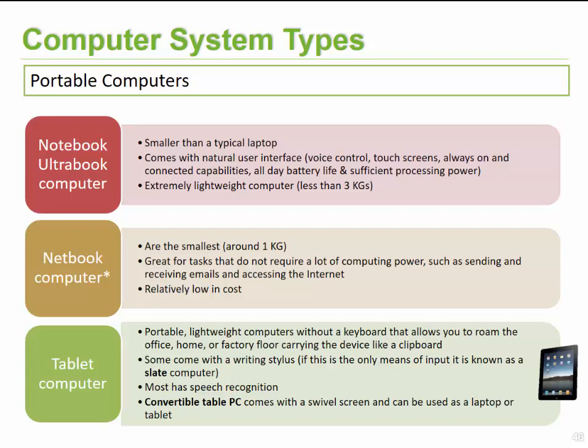The last category for portable computers is tablet computers, which have also gained a lot of popularity in recent years. These are portable, lightweight computers that come in most cases without a keyboard, but do provide touch screen capabilities, so your interaction will be on screen. People typically use these in homes, offices, and factory floors — it's almost like carrying an interactive electronic clipboard. Some of them do come with a writing stylus, and if they contain only a writing stylus with no other input capability, some people refer to them as slate computers.